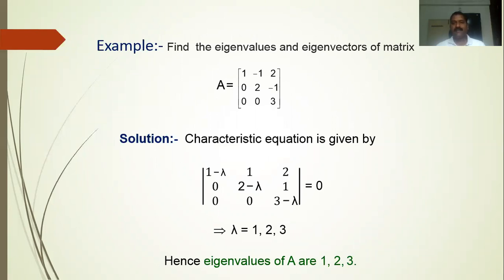The characteristic equation is det(A minus lambda I) equal to 0. You need to subtract lambda from the diagonal elements, giving entries like (1 minus lambda), 1, 2, and so on, set equal to 0. If you expand this determinant, it leads to a cubic equation. Finding its roots via synthetic division or factorization gives lambda equal to 1, 2, 3.